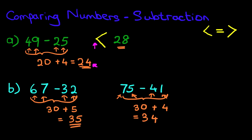So on the left-hand side, we've got 35. On the right-hand side, we've got 34. So what symbol do you think goes between these two sets of numbers? That's right, it's the arrow pointing to the right, because 35 is more than 34. And don't forget, the arrow has to point towards the smaller number. So this question now reads, 67 minus 32 is greater than 75 minus 41.